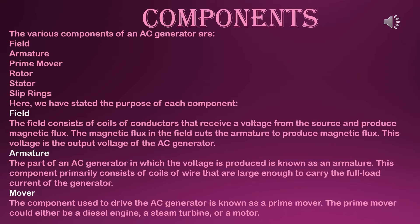The field consists of coils of conductors that receive a voltage from the source and produce magnetic flux. The magnetic flux in the field cuts the armature to produce a voltage, which is the output voltage of the AC generator. The armature is the part of an AC generator in which the voltage is produced. This component primarily consists of coils of wire that are large enough to carry the full load current of the generator.